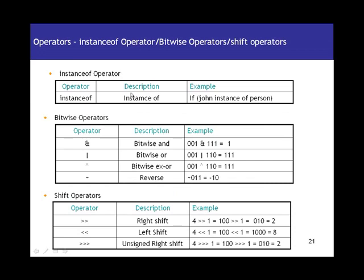The instanceof operator is something specific to Java. It checks if a particular reference is an instance of a particular class. For example, if you create a reference variable john referring to an object of type Person, then john instanceof Person returns true. But if you have an Employee class and say john instanceof Employee, you get false because john is of type Person, not Employee.